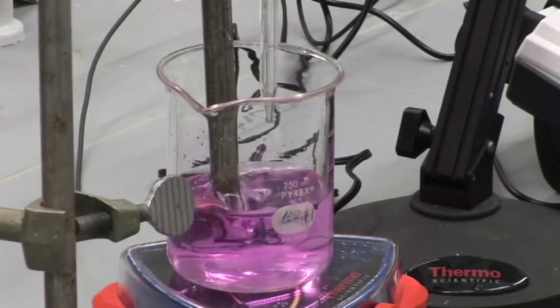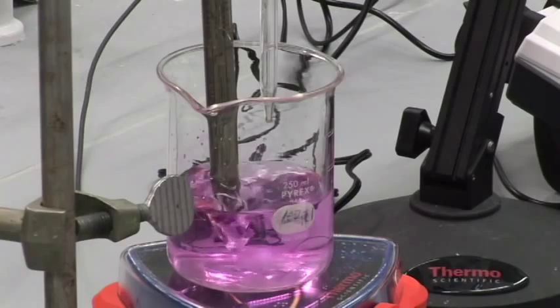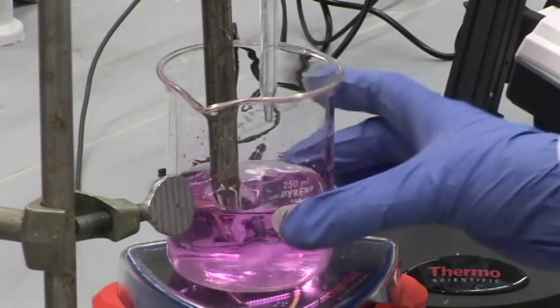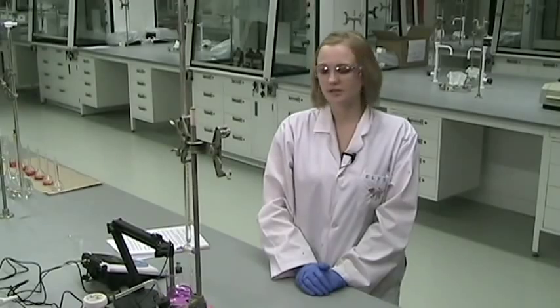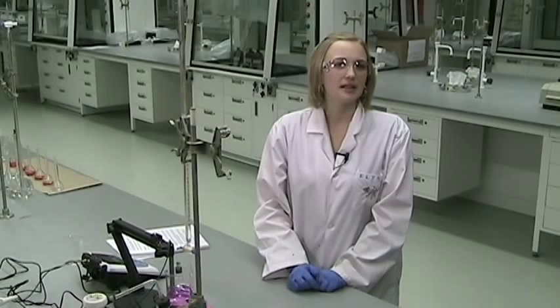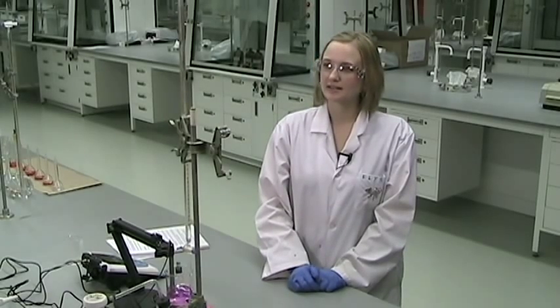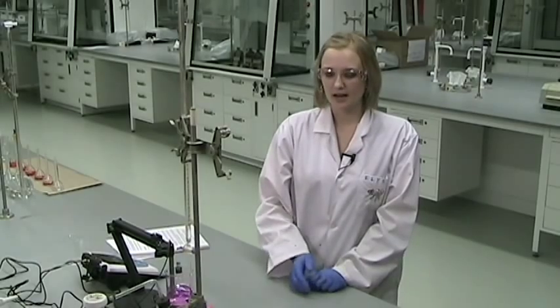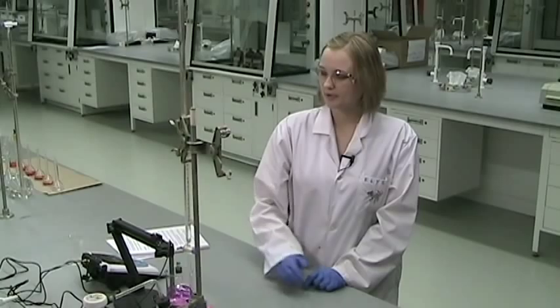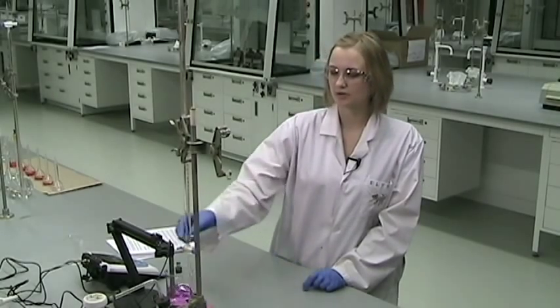All right, so when you've added enough base to reach the end point of the titration or the equivalence point, you'll see the color change from clear to pink. Make a note of at what point and what pH and what volume the color does change. You may see it a little bit lighter at first, but because in a strong acid, strong base titration, the pH changes very quickly when you get to the equivalence point. You may just see a really sharp jump in pH, and the color will change really quickly.